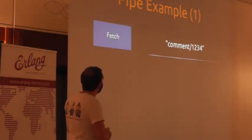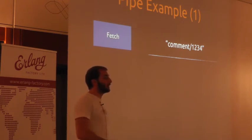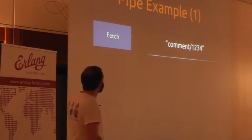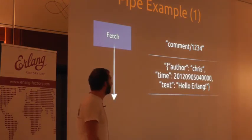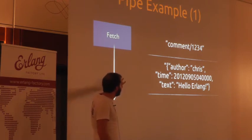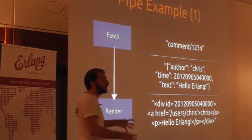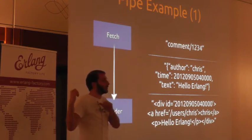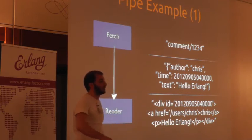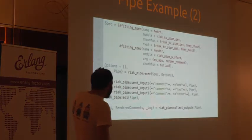Let's take an example — something a little more high level. Some sort of pipelining process: I might want to render some HTML markup based on a comment I want to fetch from my database. I fetch that and get back a JSON record — this is done in one fitting. The output of that fitting is then sent along to another fitting process, which converts that JSON into HTML and passes the output back out of the pipeline, or on to another stage which might construct your HTML template.